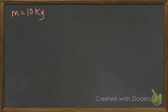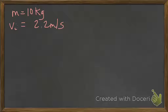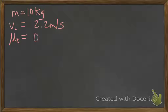What else is given? How are we going to label initial speed? 2.2 meters per second. And μk is 0.1. It wants us to find how far the sled moves. So what are we actually looking for? Distance.